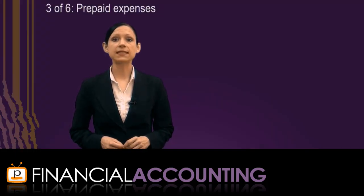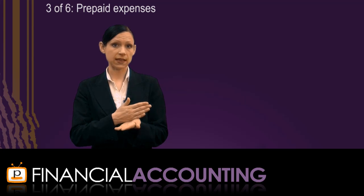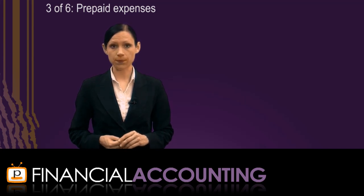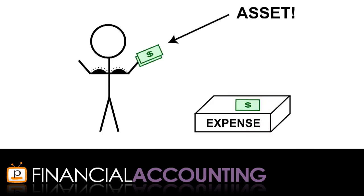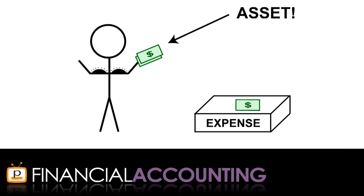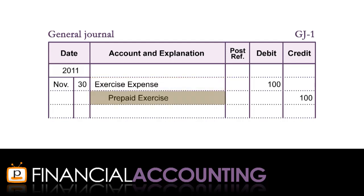Prepayments, or prepaid expenses, are assets that expire as time passes or through use. As they are consumed, their cost needs to be transferred from the asset account to an expense account. For example, remember the $300 gym membership purchased in the second summary video? When the membership was purchased, we had three months left, recorded as a debit to the prepaid exercise account and a credit to cash. At the end of the first month, we had used up one month, or $100, of the gym membership. The adjusting entry consists of a debit to exercise expense for $100 and a credit to the prepaid exercise account for $100. The date of the adjusting entry is recorded as the last day of the month — in this case, the 30th of November.